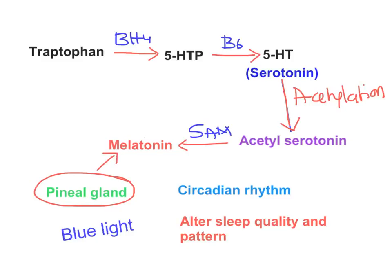What is the purpose of melatonin? Melatonin is a neurohormone that participates in the maintenance of the dark and light cycle, which is the sleep-wake cycle also referred to as circadian rhythm. Circadian rhythm is basically maintained by melatonin.